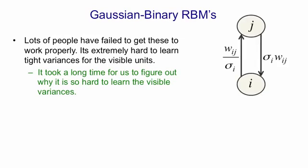This picture helps. If you consider the effect that visible unit i has on hidden unit j, when visible unit i has a small standard deviation, sigma i, that has the effect of exaggerating the bottom-up weights. That's because we need to measure the activity of i in units of its standard deviation.